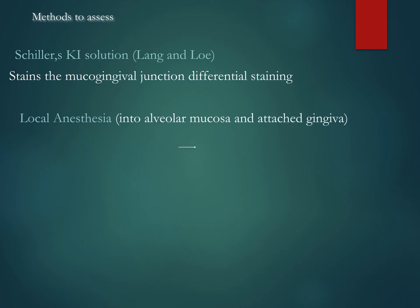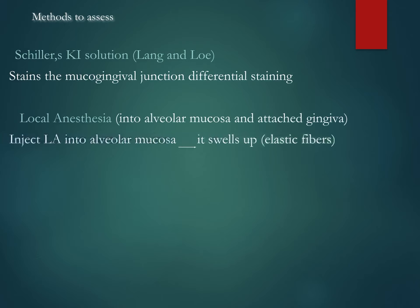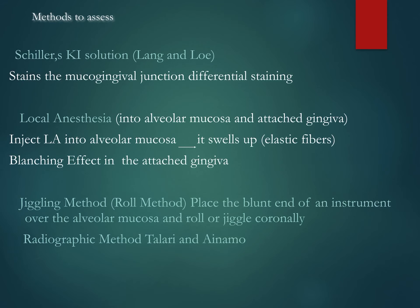The local anesthesia technique involves injecting into the alveolar mucosa and the attached gingiva. When you inject, it swells up because of the presence of elastic fibers — this is the blanching effect in the attached gingiva. Then there is the jiggling method: you place the blunt end of an instrument over the alveolar mucosa and roll or jiggle it coronally. The alveolar mucosa moves but the attached gingiva doesn't, so you can differentiate where the mucogingival junction lies.